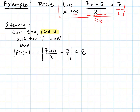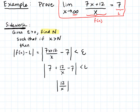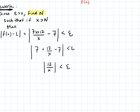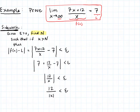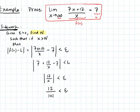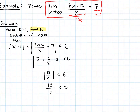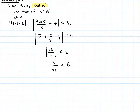I see right away that I can simplify: dividing both terms in the numerator by x gives |7 + 12/x - 7|, which simplifies to |12/x| < epsilon. The sevens cancel, so we have 12/|x| < epsilon. We are letting x go to infinity, so x is positive, but I'll keep the absolute value to guarantee that formally.